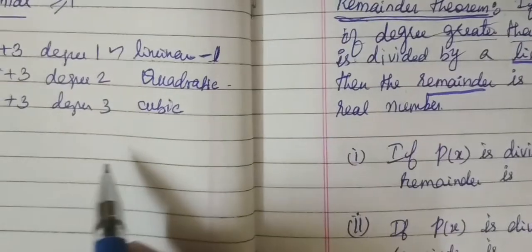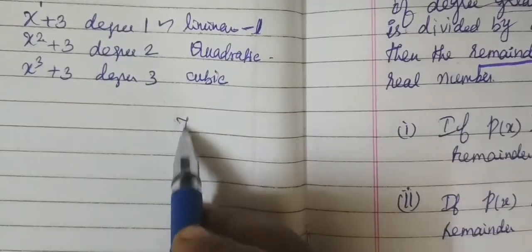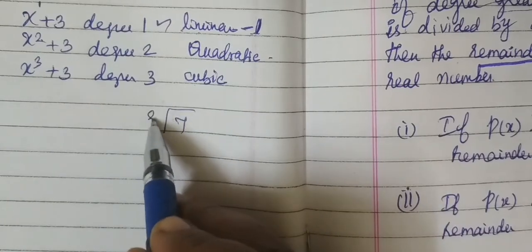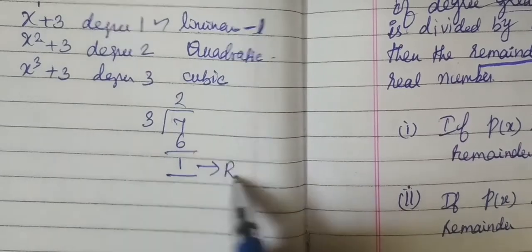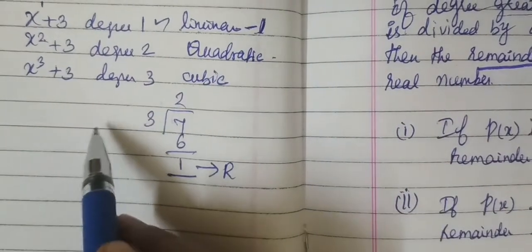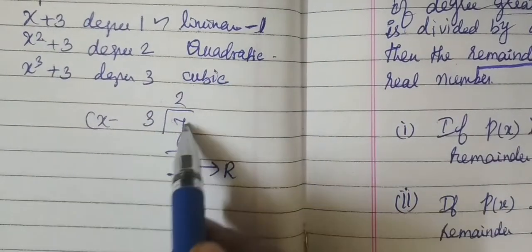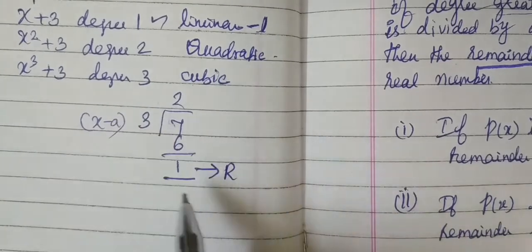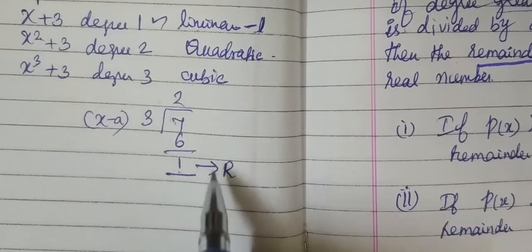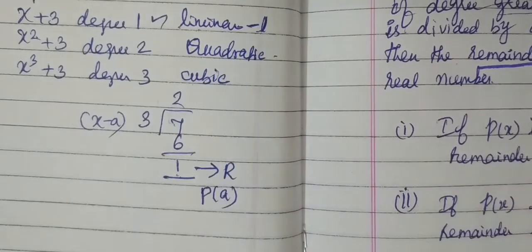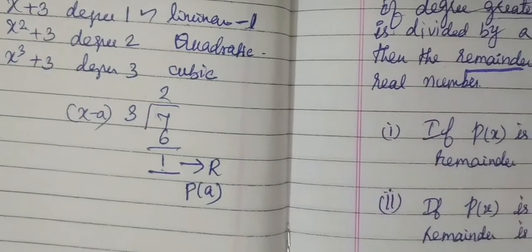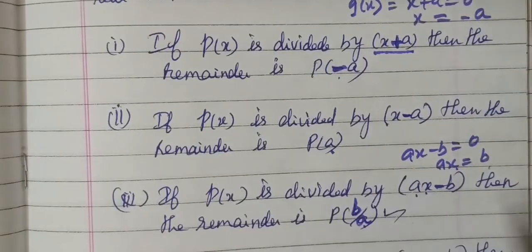This remainder means p(a). In other words, consider dividing 7 by 2 - we get remainder 1. Similarly, when you are dividing a polynomial by x minus a, you will get a remainder, which is p(a). If you work through the sum, you can understand. In this polynomial, we have 4 steps.